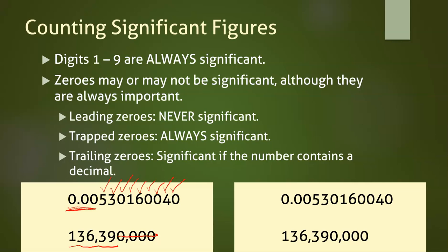For numbers with a decimal, we can start on the left and strike through until we get to a number. That gives us the same nine sig figs that we got before.